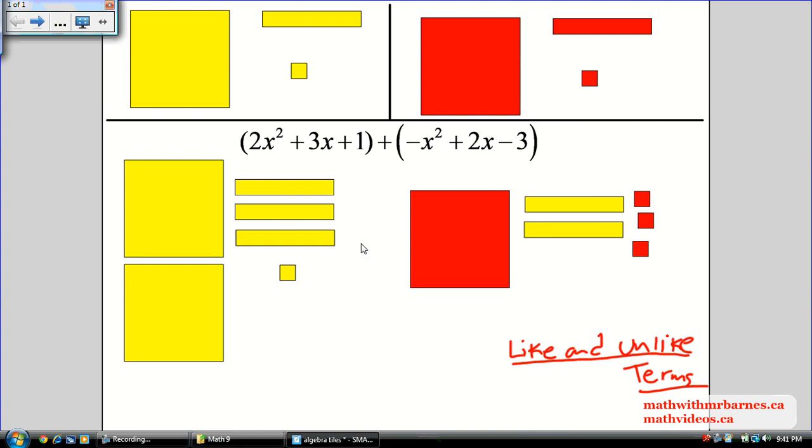Unlike terms are terms that are different. So, like x and x squared, or 3 and x, or 3 and x squared, they're different. Now, before I used to teach polynomials in the old grade 9 program without algebra tiles, a lot of students had trouble recognizing what like terms and unlike terms were.